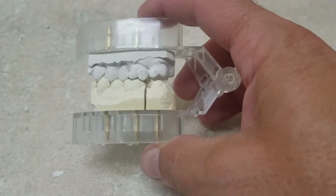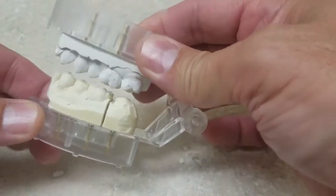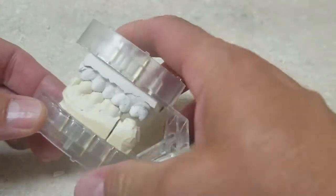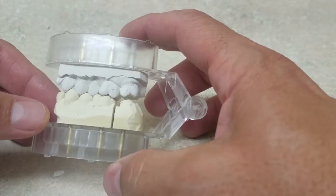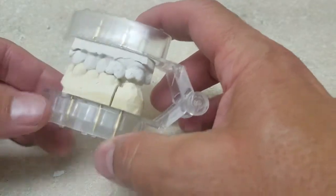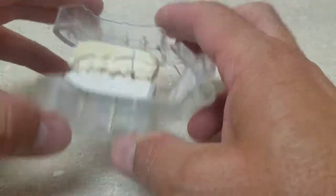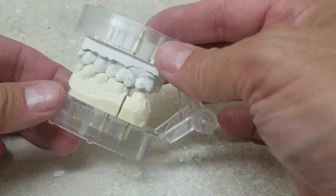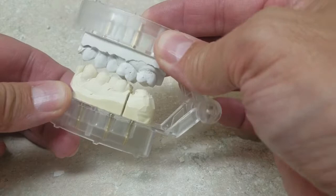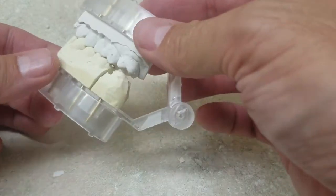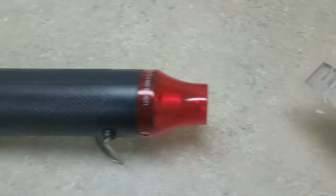Now sometimes when the patient bites in the impression they bite crooked. With this system the exact way the patient bites in the impression is exactly how you're going to get it. It's usually lined up pretty good so you don't have to do any adjustments. But if the patient does bite crooked I'll show you how to adjust it.